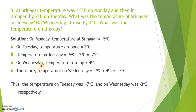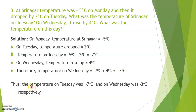On Wednesday, Tuesday's temperature was minus 7 degree Celsius. The temperature rose — rising of temperature is denoted by plus sign — so plus 4 degree Celsius. Therefore, the temperature on Wednesday equals minus 7 degree Celsius plus 4 degree Celsius. Minus and plus gives minus, and the sign of the larger number applies, giving minus 3 degree Celsius. The temperature on Tuesday was minus 7 degree Celsius and on Wednesday was minus 3 degree Celsius.